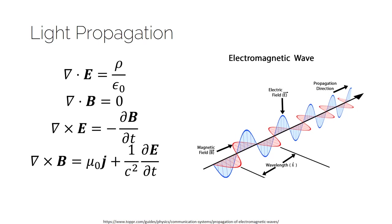Light is an emergent phenomenon arising from Maxwell's equations — four differential equations that govern the properties of electric and magnetic fields and the relationship between them. Equations three and four are what we're focusing on here: equation three shows that a changing magnetic field (dB/dt) generates a perpendicular electric field via the cross product, and equation four shows a changing electric field generates a magnetic field.